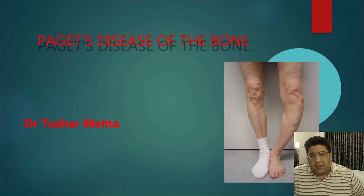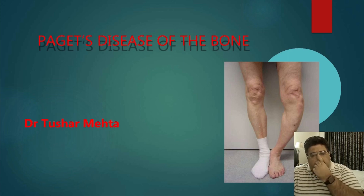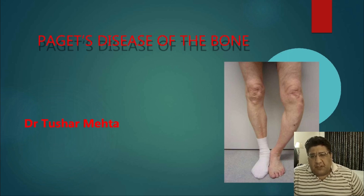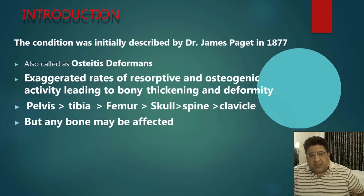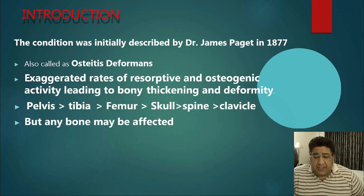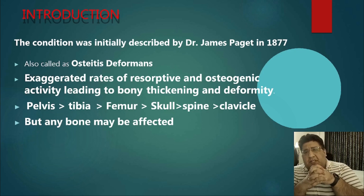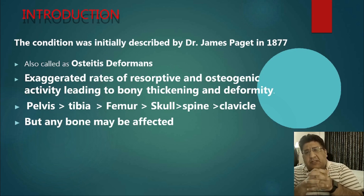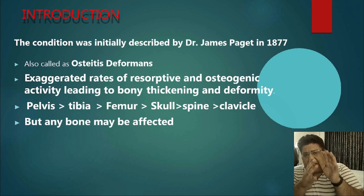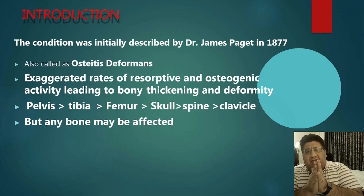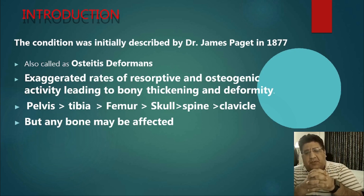Paget's disease is also called osteitis deformans because there are multiple deformities that happen in bones, along with an inflamed and mixed picture presentation. This term was initially described by Dr. James Paget in 1877. It is a high turnover bone disease — the osteoclast has a tremendous potential for resorption, and simultaneously the osteoblast has a tremendous potential for formation.